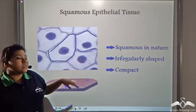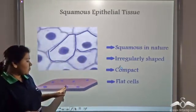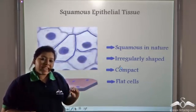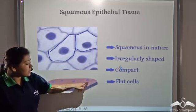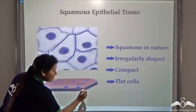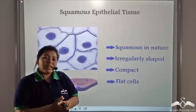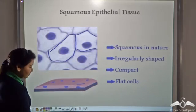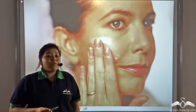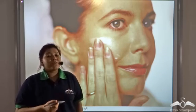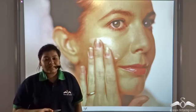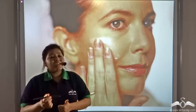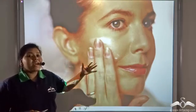Another feature of this tissue is that they are flat cells. The upper layer and the lower layer are very close to each other, giving them a flat appearance. So these cells are flat because the upper surface and the lower surface are very close to each other. Squamous epithelial tissue provides us with protection, protecting our internal organs from mechanical stress. Apart from this, it also has the property of exchangeability — substances can diffuse in and out of this tissue.